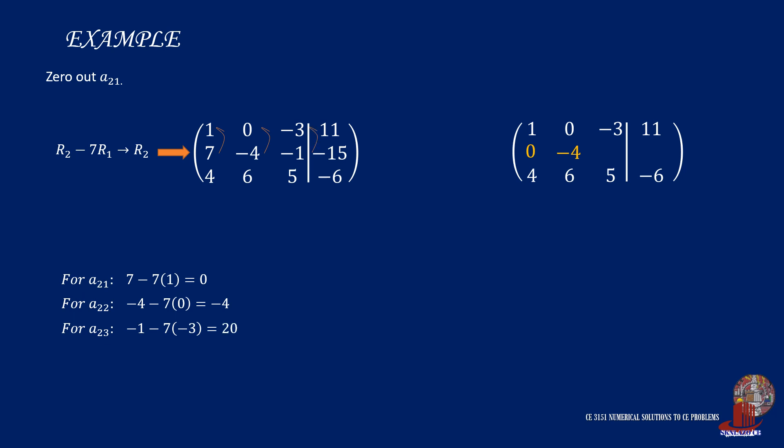Next is to zero out all the other elements in the first column, and we start from element 2,1. The pivot element's job is to zero out the other elements in its column. So by comparing elements, we can devise the formula for the row update. In this example, we use row 2 minus 7 times row 1, and have these as the new row 2. So for element 2,1, 7 minus 7 times 1 is equal to 0. Element 2,2 is negative 4 minus 7 times 0, and it is equal to negative 4. Then for element 2,3, we have negative 1 minus 7 times negative 3 as 20. And the constant element is negative 15 minus 7 times 11 gives negative 92.